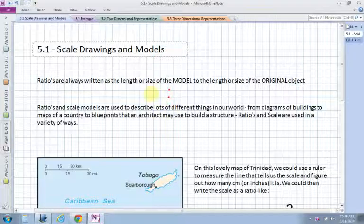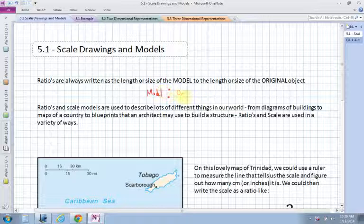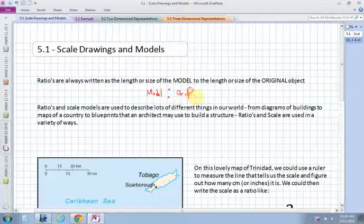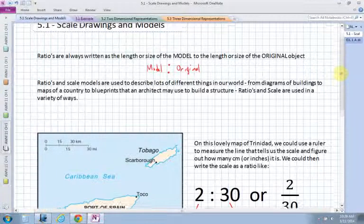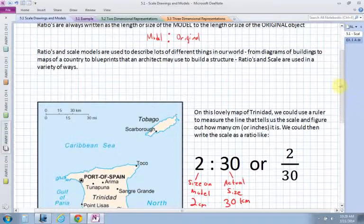So you have the model to the original. And that's important so you know that the first number represents what's on the picture or the diagram or the model, and the second number represents what's in the real world, the actual distance, length, or size of the object.